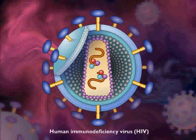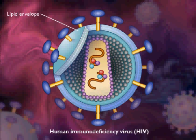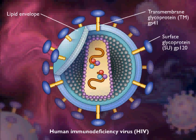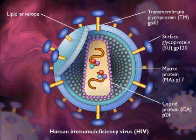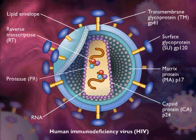AIDS is caused by the Human Immunodeficiency Virus, HIV. This is an enveloped virus. The envelope is derived from the host cell membrane with viral glycoproteins such as GP120 and GP41 inserted into the membrane as the virus leaves the cell. The core is composed of P24 capsid protein and the P17 matrix protein helps maintain viral structure. Inside the core are two identical copies of single-stranded RNA viral genome and three enzymes: reverse transcriptase (RT), protease (PR), and integrase (IN).